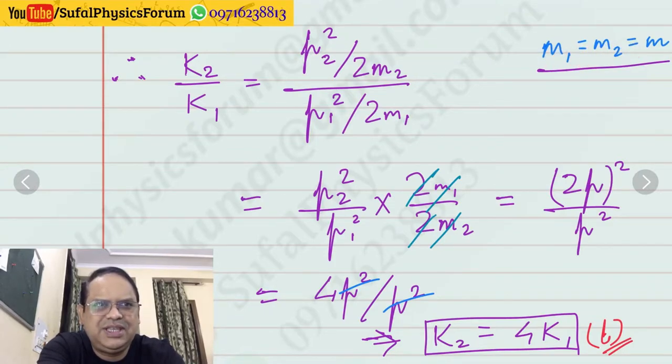And then the required kinetic energy ratio is P2 or P1 whole square ratio, which is 4P squared upon P squared. So hence kinetic energy will be increased by 4 times. Option number B.